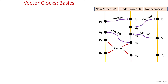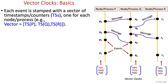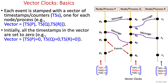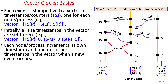Here we have three nodes or processes P, Q and R having 4, 5 and 3 events respectively. Unlike a single timestamp in a Lamport's clock, here each event is stamped with a vector of timestamps, one for each node or process. Initially, all the timestamps in the vector are set to 0.